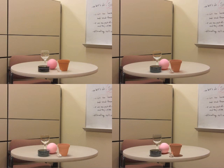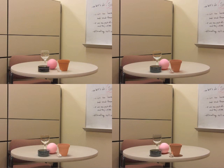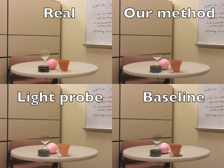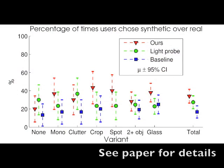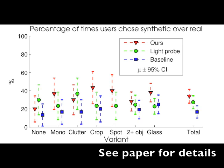We also created a user study to measure the quality of our results. Can you tell which of these are real? We tested three methods for inserting synthetic objects, including our own, against real images. We also tested four variants; see our paper for details. Our study showed that each method appears highly realistic to people, and also that our method is preferred to other state-of-the-art techniques.